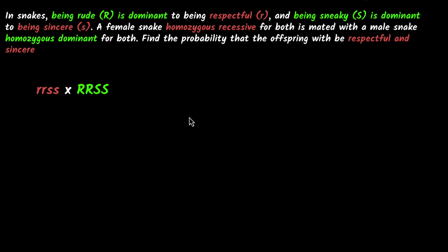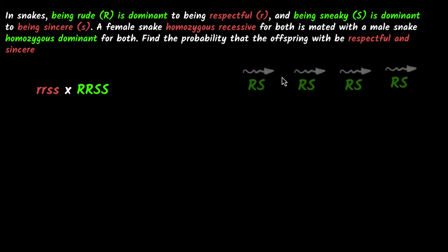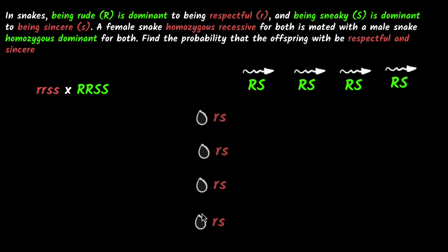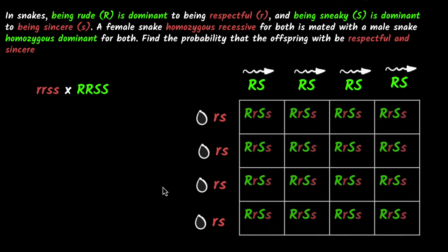Now, to figure out what's going to happen with the offspring, we're going to write down what the sperms and what the egg cells are going to look like. This is the male, so these will give you the sperms and these will be the eggs. We just need to make sure they are sorted independently. For sperms, you get this R combining with this S — and you're going to get the same thing every time. This R combining with this S, all of them will be the same. Similarly, the eggs: R combining with S — all combinations will be exactly the same.